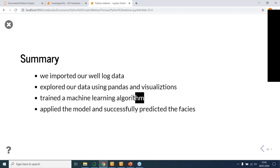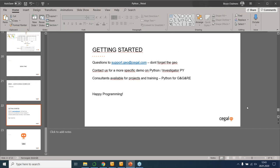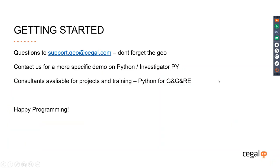Thanks Thomas. So now we're just going to have a couple of closing remarks before we open up for questions. Just to recap, we showed today the Python tool, which is really there to run Python scripts inside of Petrel, and the Investigator Py, which is there to help you harvest a clean dataset for taking over to Python for data science and machine learning. If you're going to get started with either of the tools, please forward any questions to support.geo@segal.com — don't forget the geo. Please contact us for a more specific demo on Python or Investigator Py. We also have consultants available for projects and a small training course called Python for Geophysics and Reservoir Engineering. So with that, I'll wish you a happy programming, and now I'll open up for any questions.